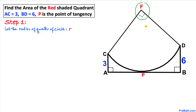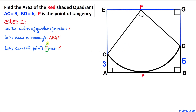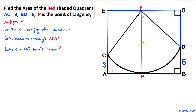In this next step we are going to construct rectangle ABGE as you can see in the figure. Now let's connect points F and P. This line segment FP is nothing more than just the radius r, so FP equals radius r.